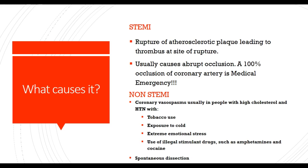What causes a STEMI? Rupture of atherosclerotic plaque leading to thrombus formation — this is the CAD patient with built-up plaque and atherosclerosis. The body tries to clot it off, but then it causes an occlusion where oxygenated blood can't reach the heart. Usually causes abrupt 100% occlusion of a coronary artery — a medical emergency. For NSTEMI, causes include coronary vasospasms, usually in people with high cholesterol, hypertension, and tobacco use, exposure to cold, extreme emotional stress, or use of stimulant drugs such as amphetamines and cocaine — cocaine is well known for coronary vasospasms.